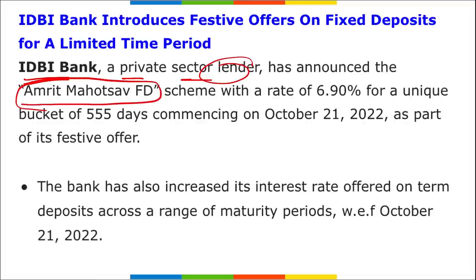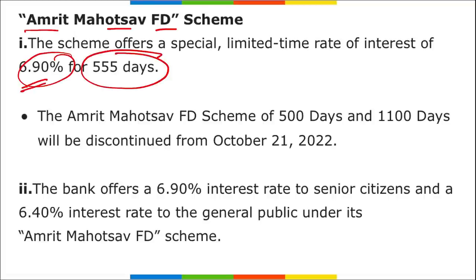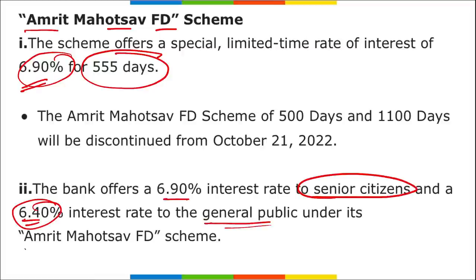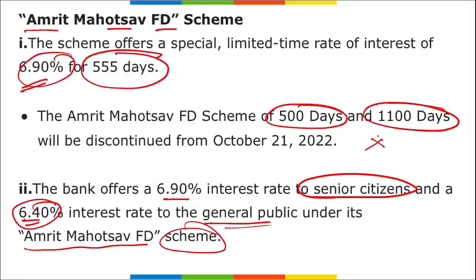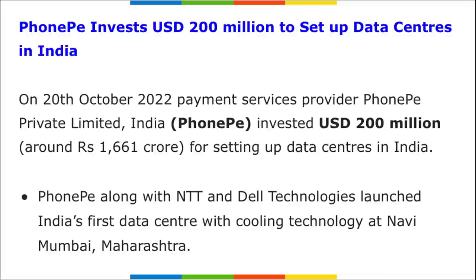IDBI Bank has announced the Amrit Mahotsav Fixed Deposit scheme offering 6.9% interest for senior citizens and 6.4% for the general public for a unique tenure of 555 days. The earlier schemes for 500 days and 1100 days have been discontinued from 21st October.